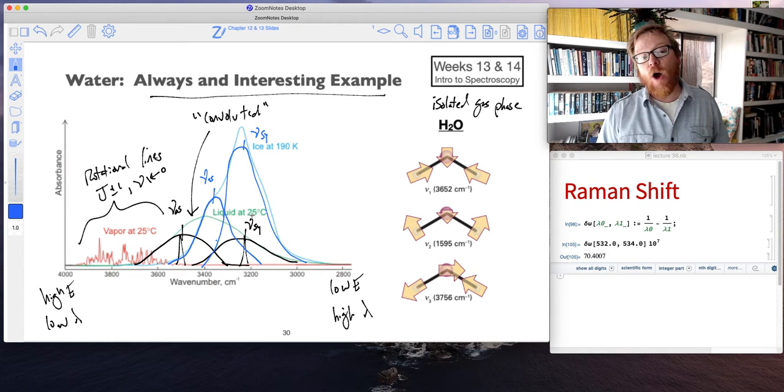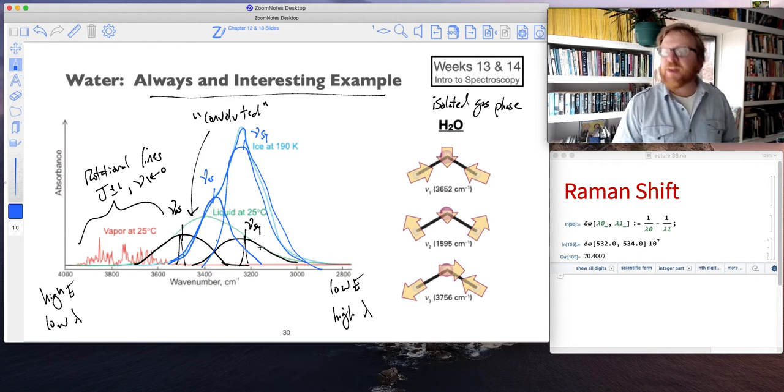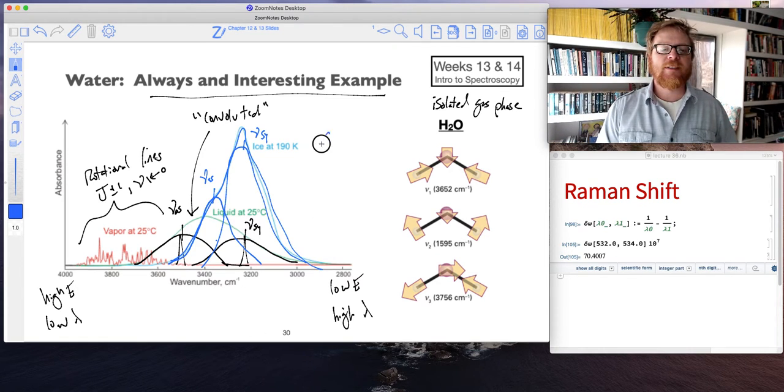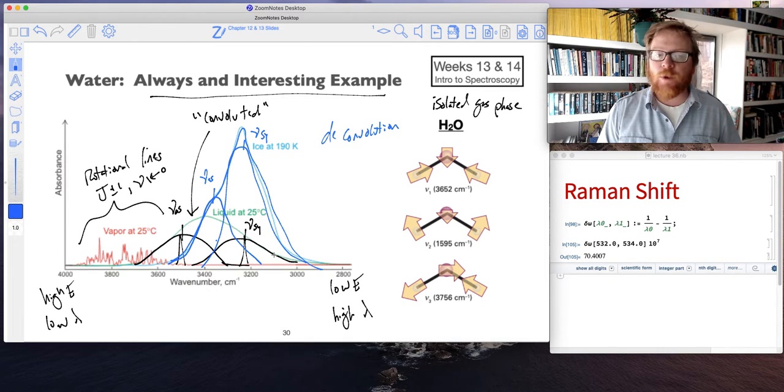We know that what we really observe in spectroscopy is the total. When both of those get added together, we see the constructive interference of both of those peaks. Deconvolution is the process of fitting our spectral data to multiple, typically a Gaussian peak.